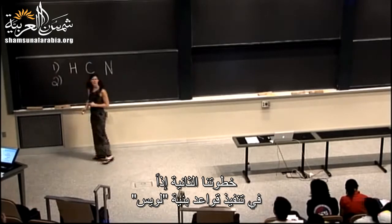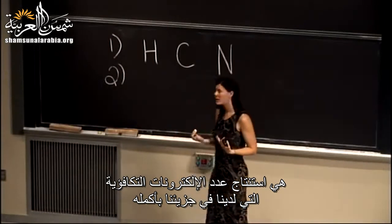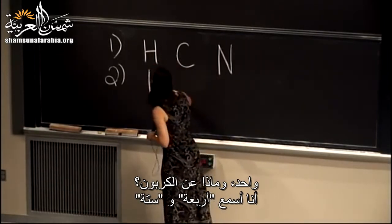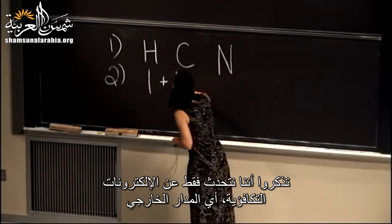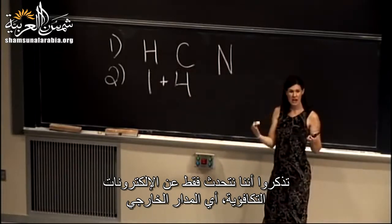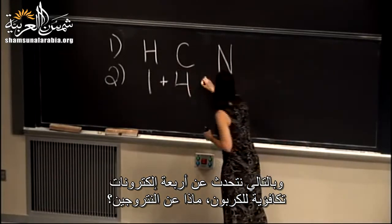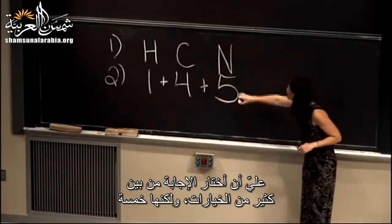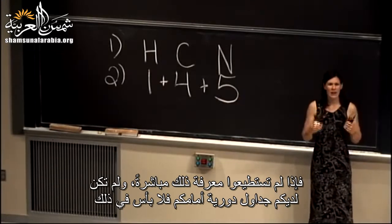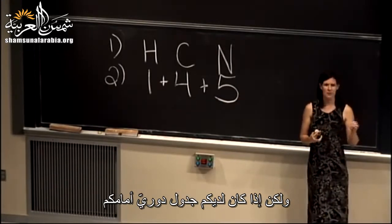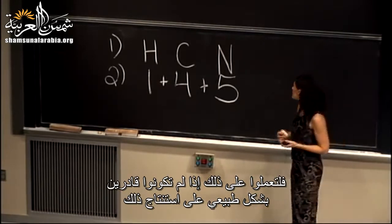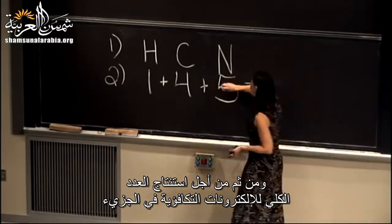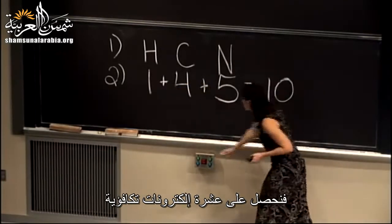Our second step is to figure out how many valence electrons we have in the entire molecule. Hydrogen has one, carbon has four, and nitrogen has five, so we have ten valence electrons total. Step three is to figure out how many electrons we would need for every atom to have a full valence shell. Hydrogen only needs two electrons — it just fills the 1s orbital. Carbon and nitrogen each need eight, giving us a total of eighteen electrons needed.